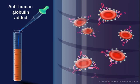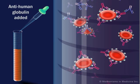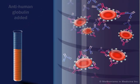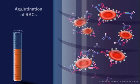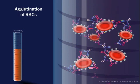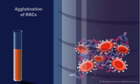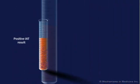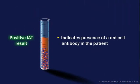The addition of anti-human globulin to these complexes results in agglutination of the red blood cells. A positive IAT indicates the presence of a red cell antibody in the patient.